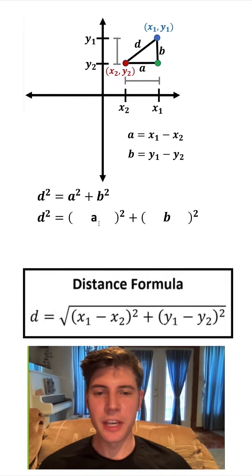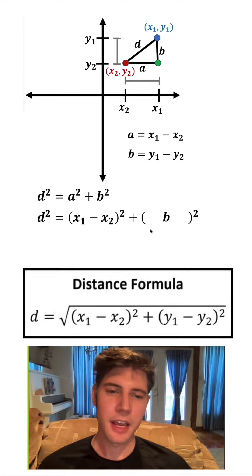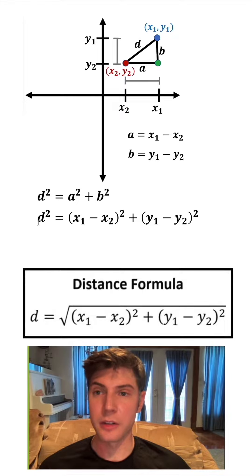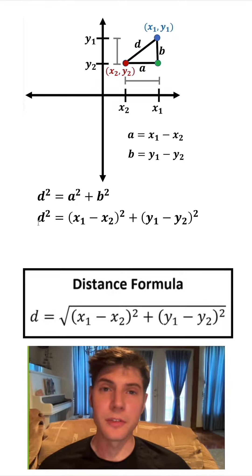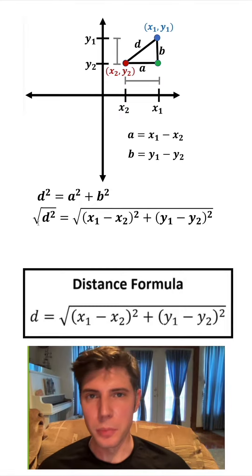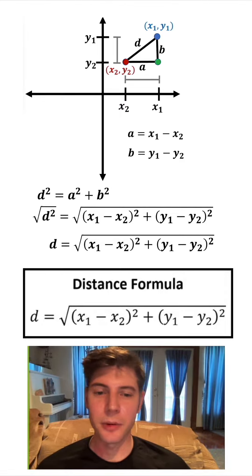So if we subtract those, we get the distance for B. For A, let's plug in x1 minus x2, and for B, let's plug in y1 minus y2. Our goal was to find D, the distance. This is D squared, so we want to take the square root — the inverse operation. We square root both sides, the left-hand side just becomes D, and the right-hand side is left alone. And this is our distance formula — that's how it's derived.